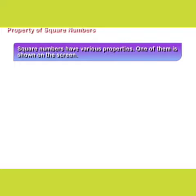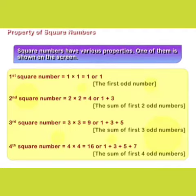Square numbers have various properties. One of them is shown on the screen. First square number = 1 × 1 = 1, or 1 (the first odd number). Second square number = 2 × 2 = 4, or 1 + 3 (the sum of first two odd numbers).